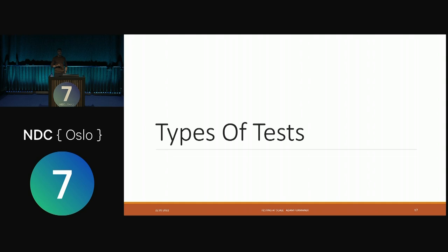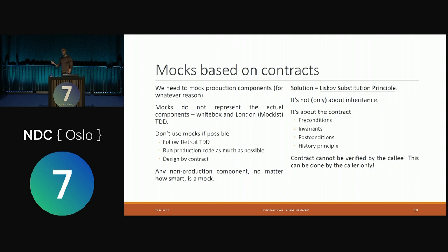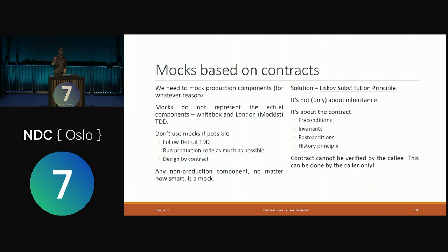When it comes to mocking, the very important thing is we need to base mocks on contracts — not on the actual behavior we can observe, but on contracts specified by the code provider. I'm talking mostly about the Liskov Substitution Principle. It's about specifying what is expected, what the invariants are, and how the code should behave. Don't use mocks where possible and just run the production code. But when it's impossible, mock the contract.